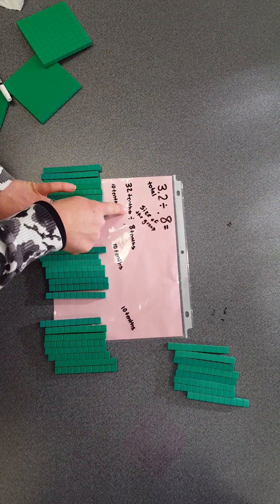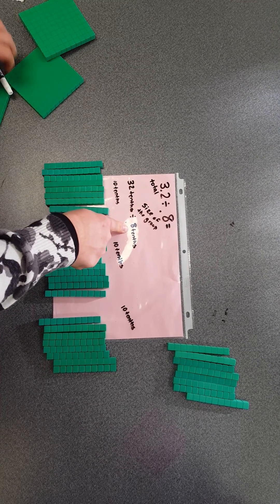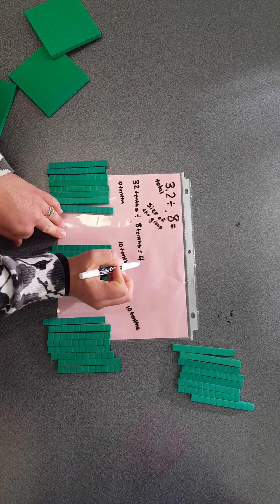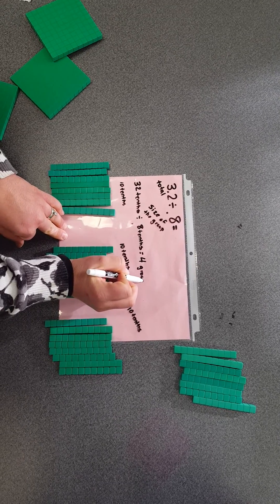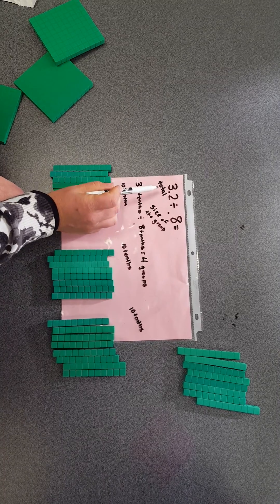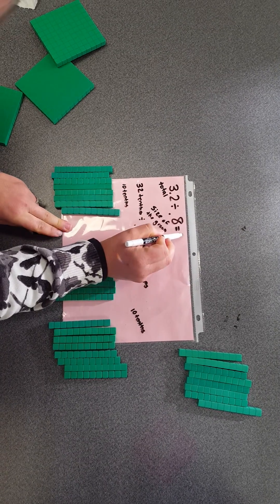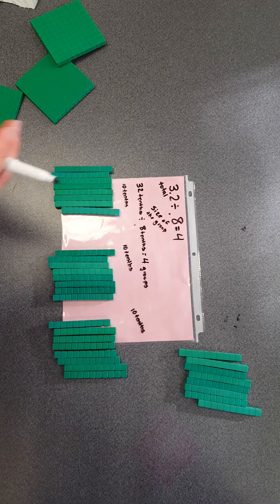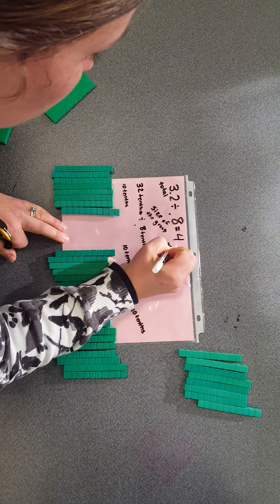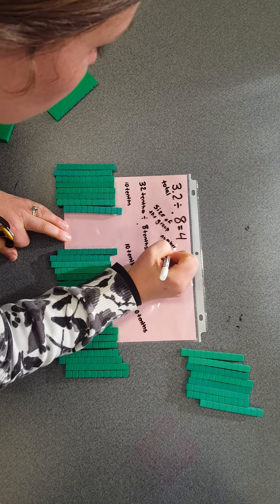I took my 32 tenths and divided it into groups that are 8 tenths big, and I got 4 groups. I didn't get parts of a group, I got whole groups. So 3.2 divided by 0.8 equals 4. That's my number of groups.